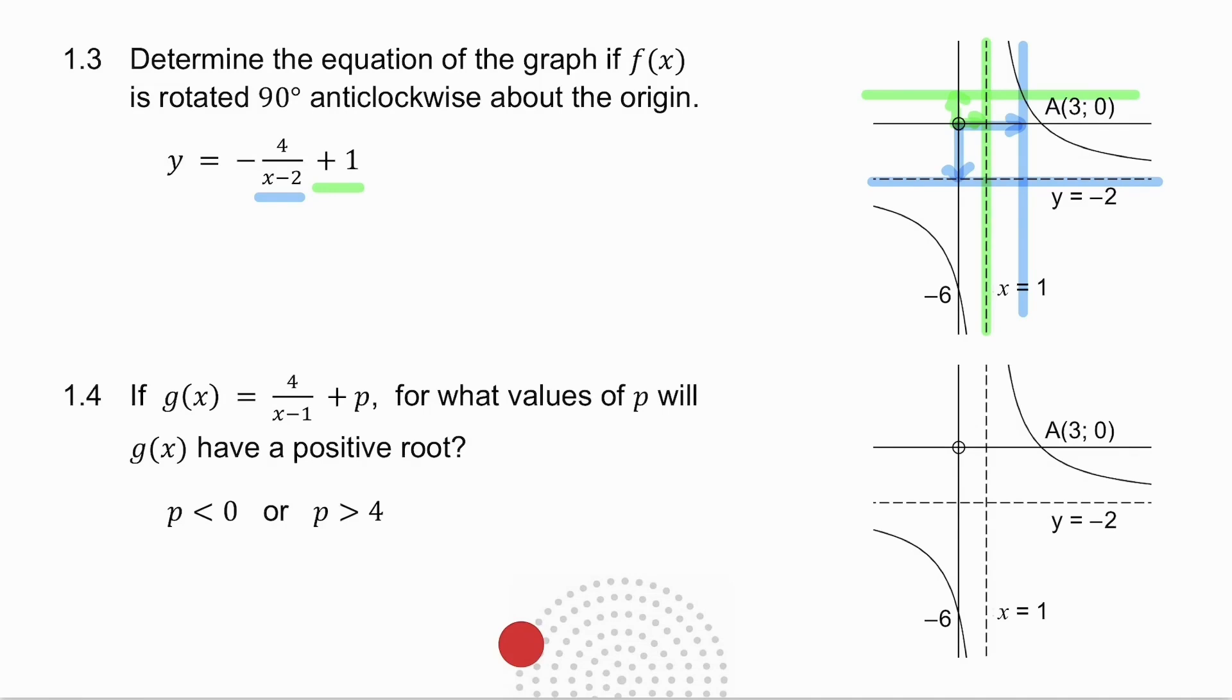Which means I've got a plus 1 on the end. What happens to my hyperbola when I rotate at 90 degrees? Well, it swaps quadrants. So my a value was 4. What is my new a value now? It's minus 4.